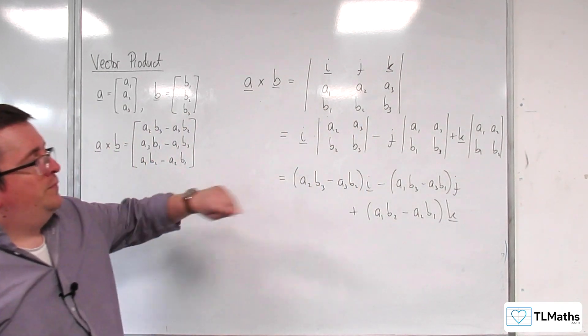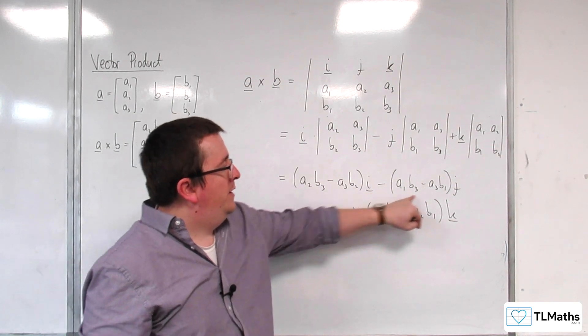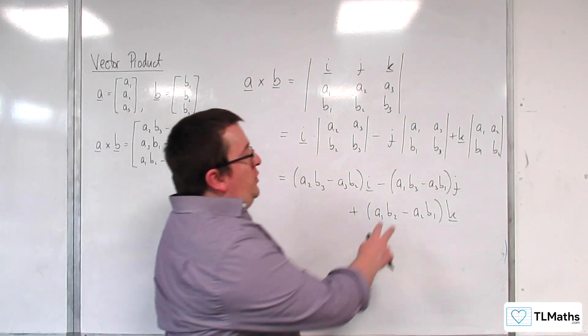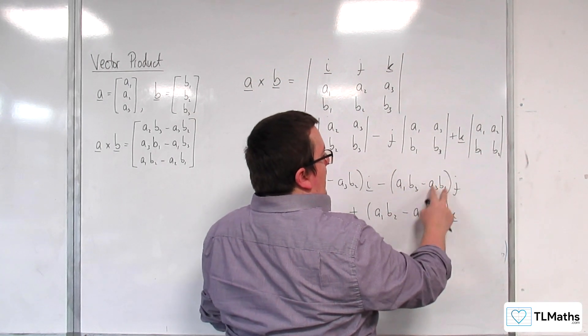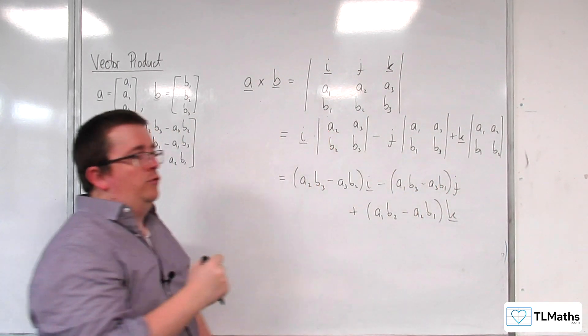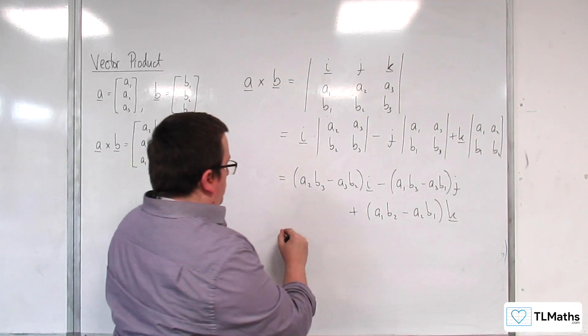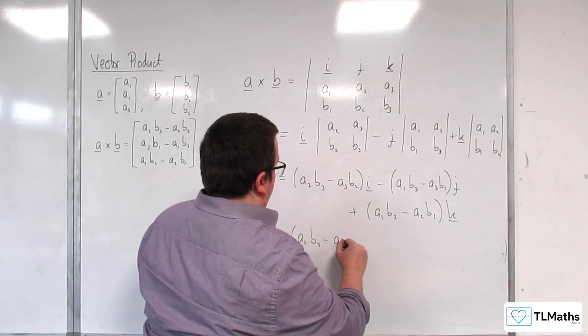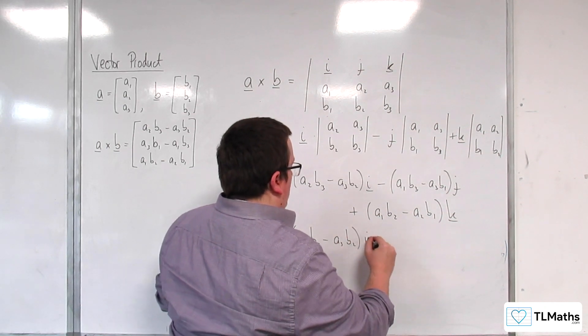So, what we can do is we can bring this minus sign into that bracket, and it changes the sign of the A1, B3, and the minus A3, B1 becomes plus A3, B1. And we can rewrite this like this.